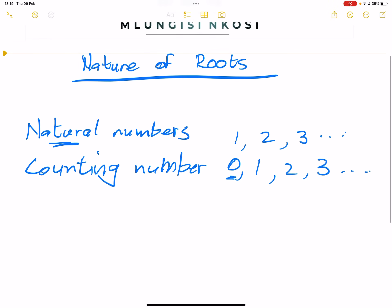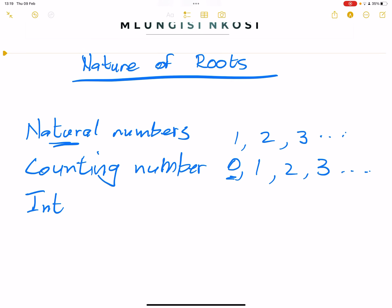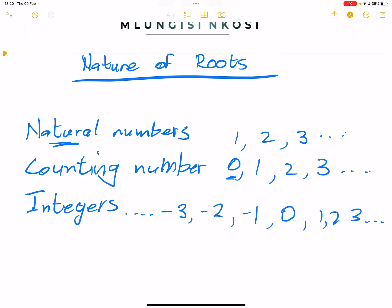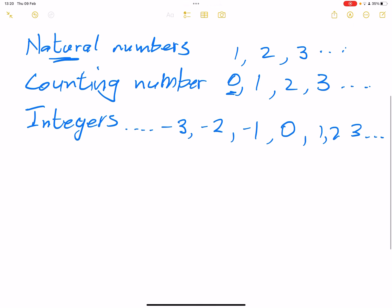Then there are what we call integers. Integers include negative numbers. So that's negative three, all the way to negative infinity, then negative two, negative one, zero, one, two, three and going forward. We are taking whole numbers but also inclusive of negative numbers.